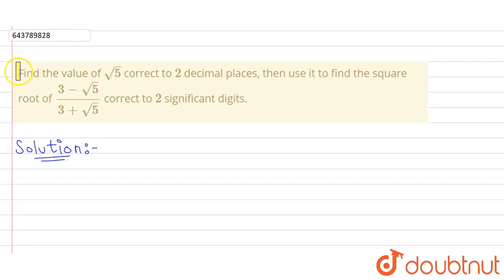Hello guys, so our question is, we have to find the value of root 5 correct up to 2 decimal places and after that we have to find the value of square root of 3 minus root 5 upon 3 plus root 5 correct up to 2 significant digits.